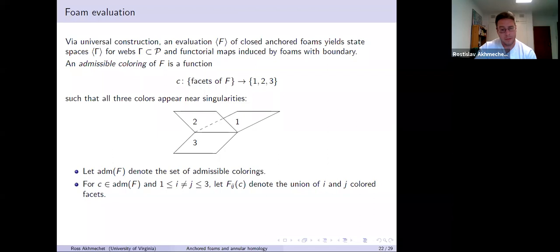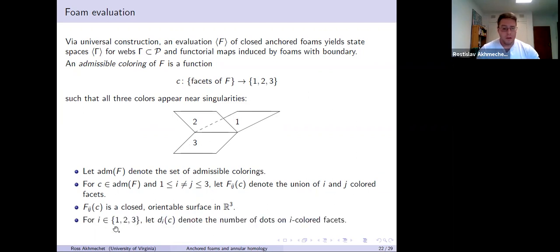If you have an admissible coloring C, and you have I and J between one and three, let F_I,J of C denote the union of the I and the J colored facets. So for example, in this picture, F one, two, you would just take this one colored sheet and this two colored sheet and you'd erase the three colored sheet. More precisely, F_IJ is a closed surface in R3, because at each singular line you've removed one of those sheets, one of the facets. It's an R3 surface, so it's orientable as well. Let D_I of C denote the number of dots on the facets which are colored by I according to C, so this keeps track of the dot placement.